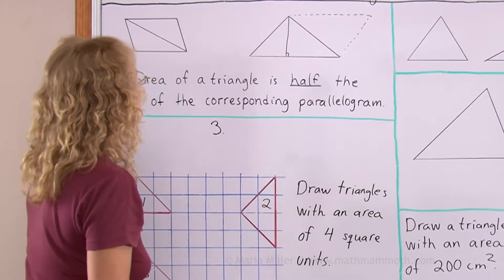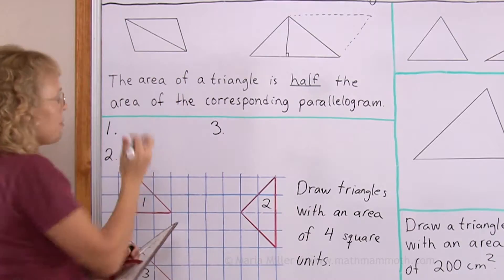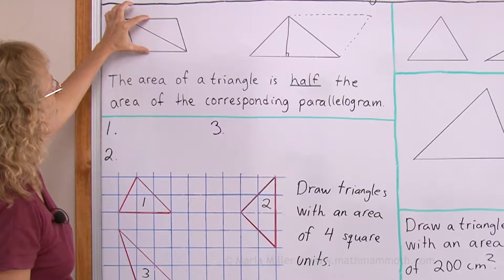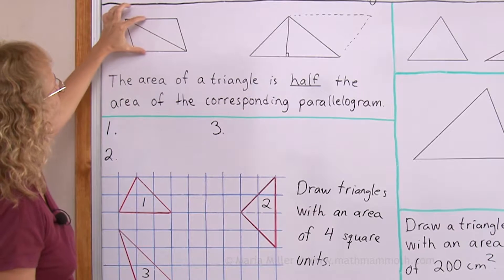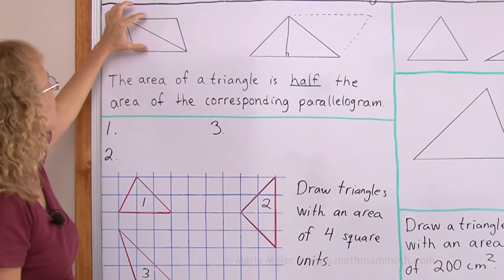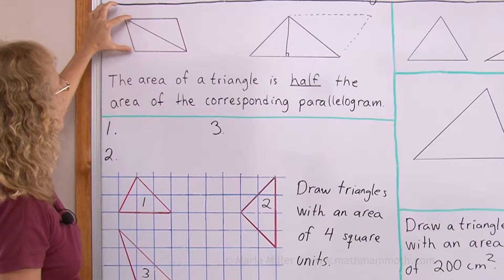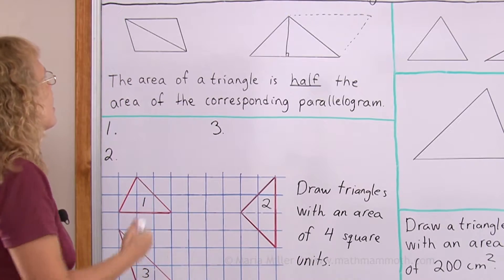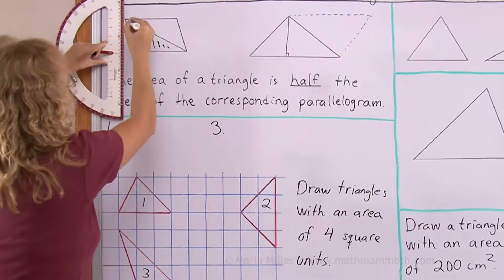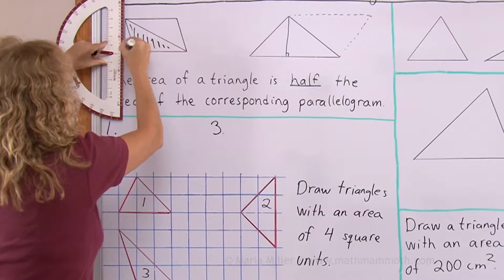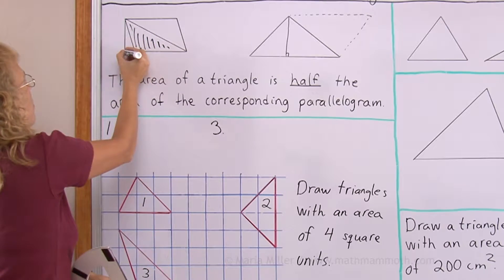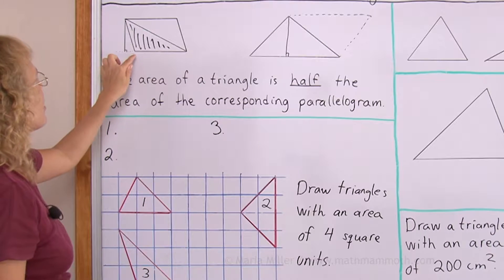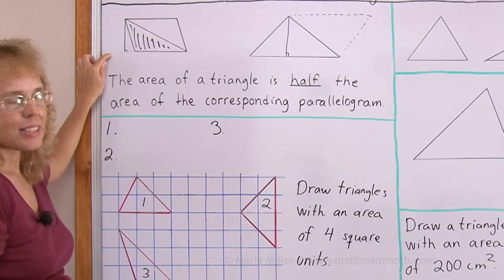Over here, the altitude of this parallelogram is anywhere between these two sides. But for the triangle, when I draw it here, it's going to fall outside of the triangle. The altitude actually goes here — so the altitude ends up being perpendicular to the continuation of the base.